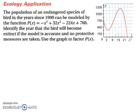Let's look at an ecology application. The population of an endangered species of bird in the years since 1990 can be modeled by the function P of x equals negative x to the third plus 32x squared minus 224x plus 768. Identify the year that the bird will become extinct if the model is accurate and no protective measures are taken. Use the graph to factor P of x.